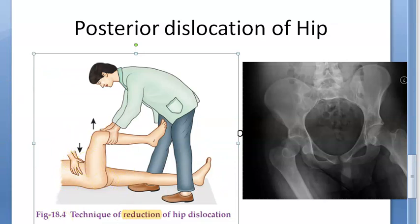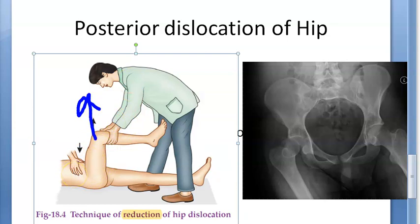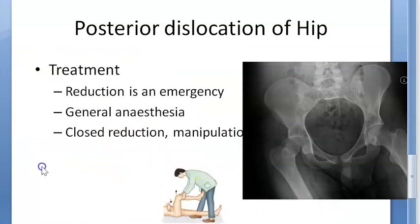The hip is flexed and the knee is at a right angle. The surgeon then exerts an axial pull — pulling upward while the assistant stabilizes the pelvis. After hearing the sound of reduction, the hip will be freely mobile in all directions. This is performed under general anesthesia. After reduction, the leg is kept in light traction with the hip abducted for three weeks.